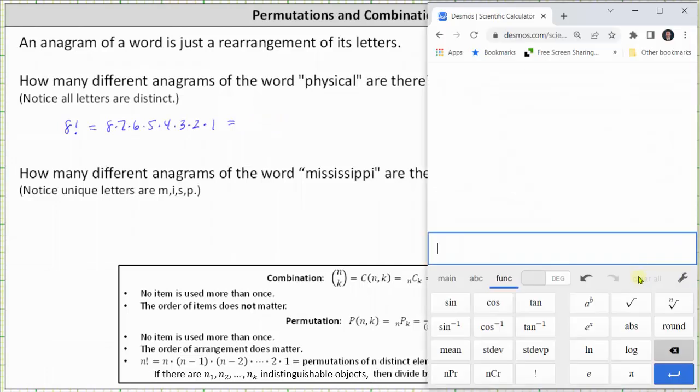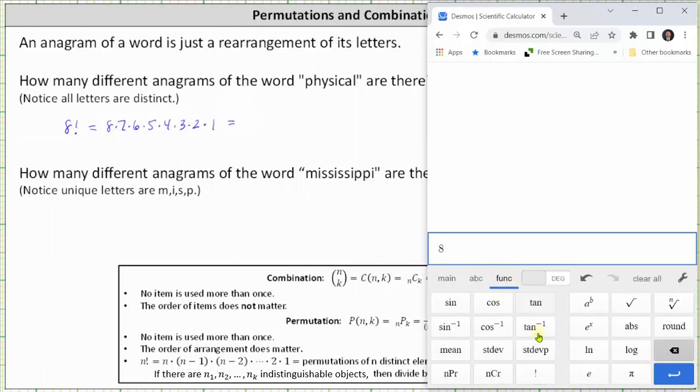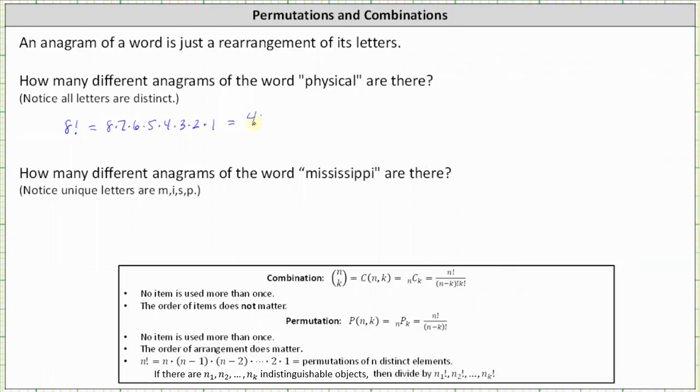Going to the calculator, we can either enter the product or most calculators have a factorial button. On the Desmos scientific calculator, to evaluate eight factorial, we simply press eight functions and then select factorial. Eight factorial is equal to 40,320. The word physical has 40,320 anagrams.